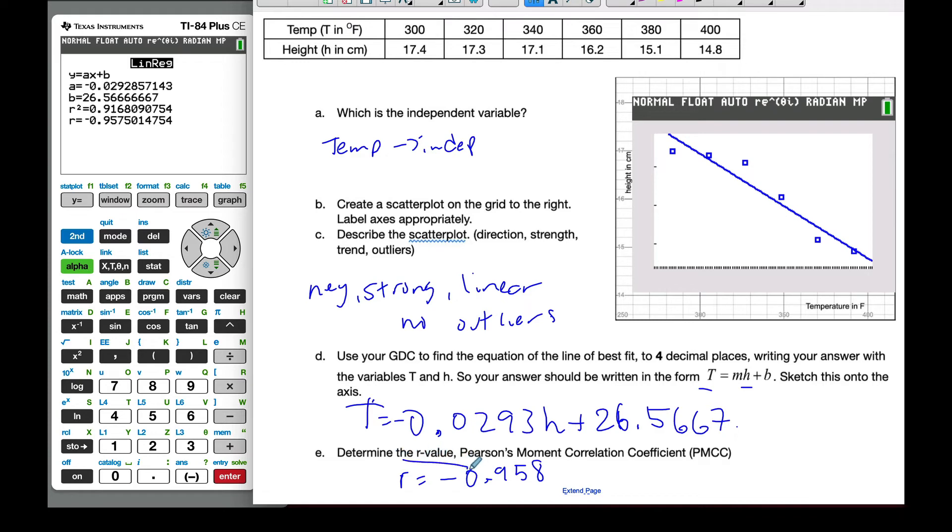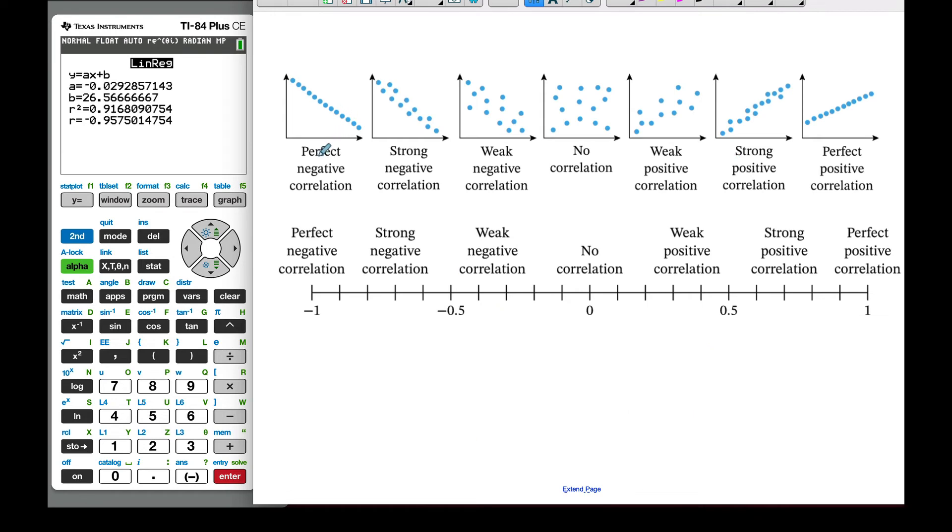And what does this value mean? That's a good question. We've just calculated it, but what does it mean? Well, if I look at this, I can have the R value ranges from negative 1 to 1. Okay, so R is always between 1 and negative 1.